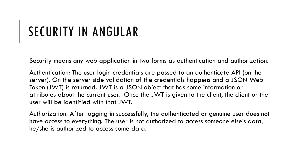How can we provide security in Angular? Security in a web application comes in two forms: authentication and authorization. For authentication, the user's credentials are passed to an authentication API on the server side, the credentials are validated, and a JSON Web Token is returned. The JWT is a JavaScript object containing information about the current user. Once the JWT is given to the client, the client will identify with the JWT. For authorization, after logging in successfully, an authenticated user does not have access to everything — the user is authorized to access only certain data.